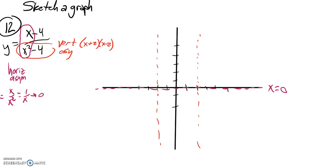And here's the other one here. So 2 and negative 2 are my vertical asymptotes.